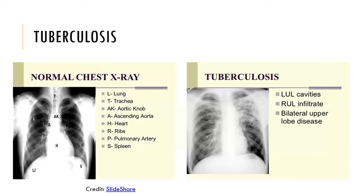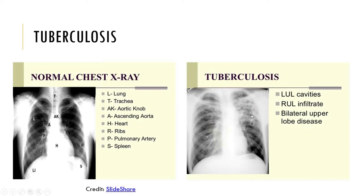Then we have tuberculosis. The x-ray on our left shows a normal chest, while the one on our right shows clear signs of tuberculosis. Tuberculosis is an infection caused by the bacterium Mycobacterium tuberculosis, and it results in fibroid masses in the lungs. You can see those masses on both lungs, and there is also an increase in the dead space between the lungs.